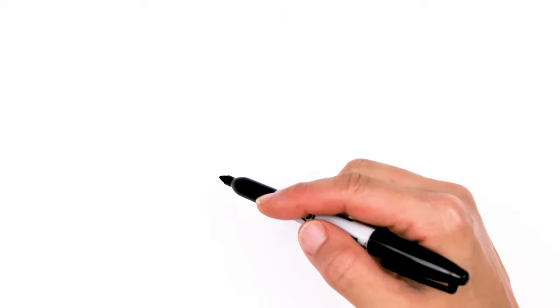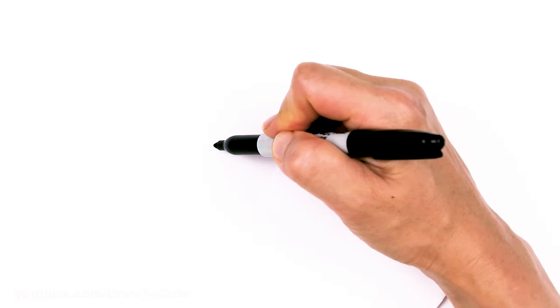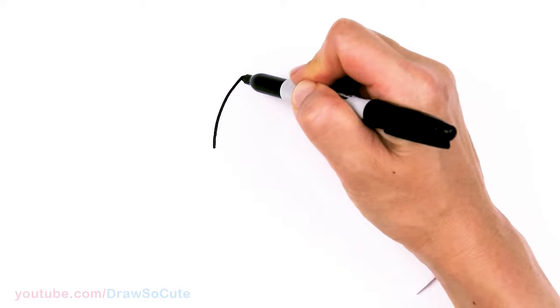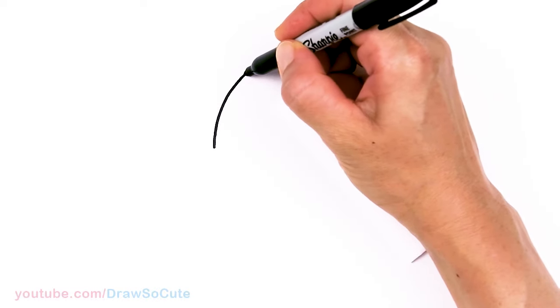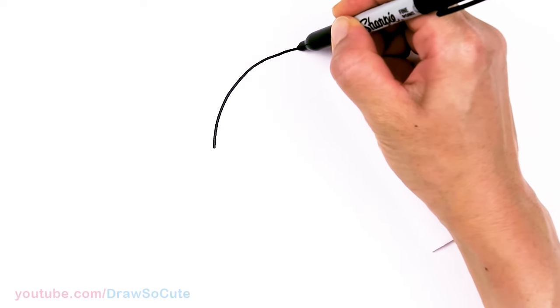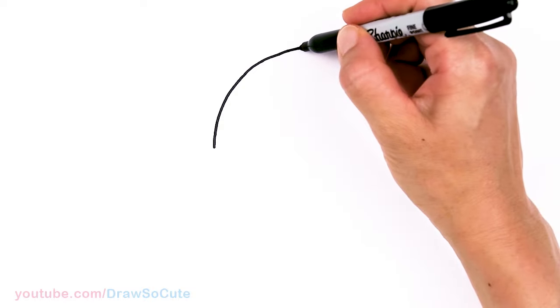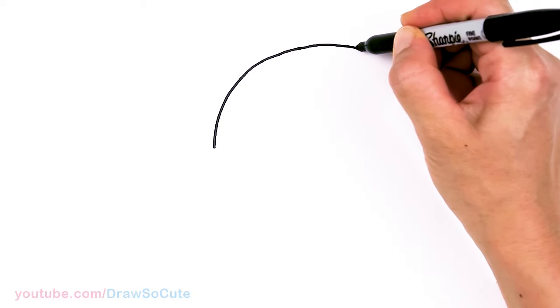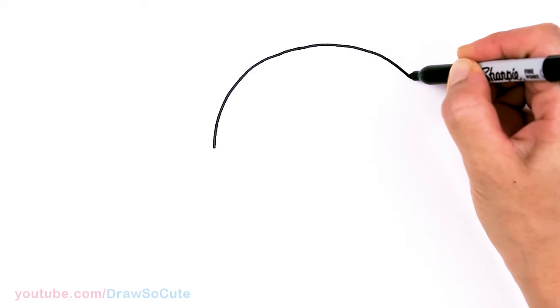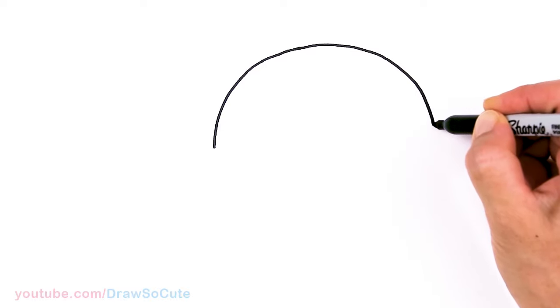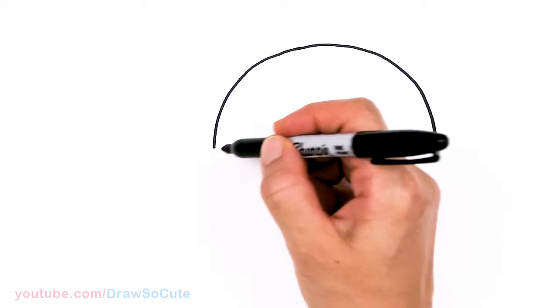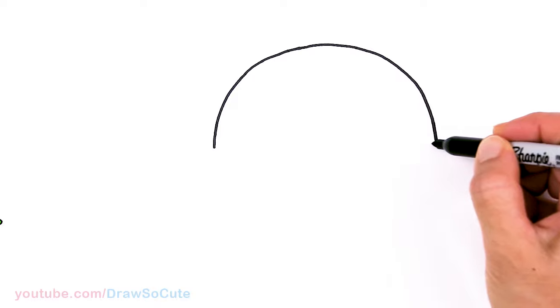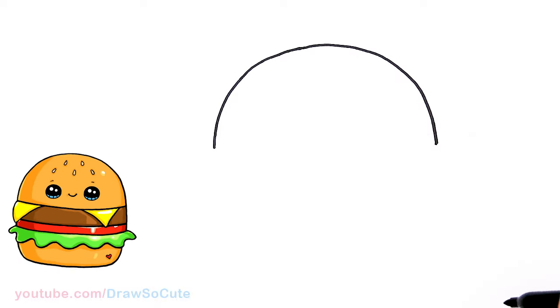To draw this yummy squishmallow, let's first start by drawing a really big curve at the top. So let's come right here and I'm just going to start drawing this dome shape and go all the way up and around to create the top bun. So nice and round and I'll bring it right back to about right here. Just want to make sure I'm about the same level there.